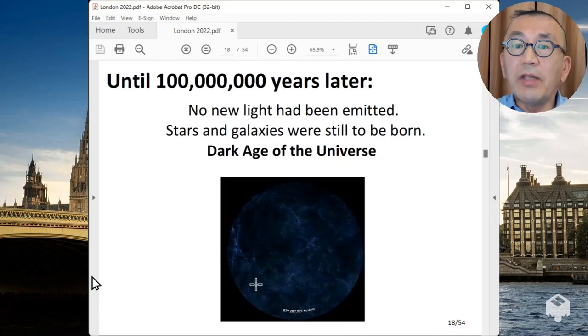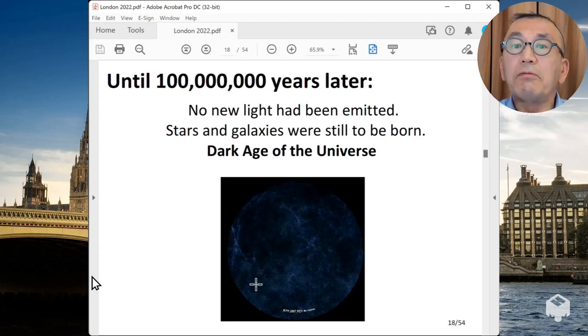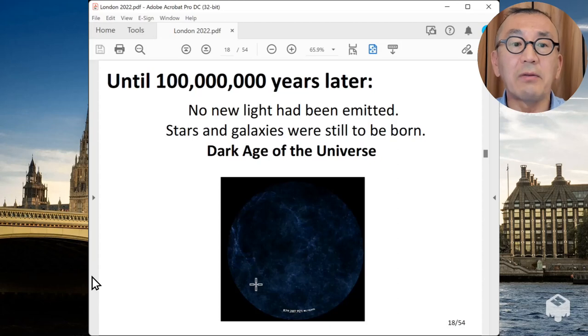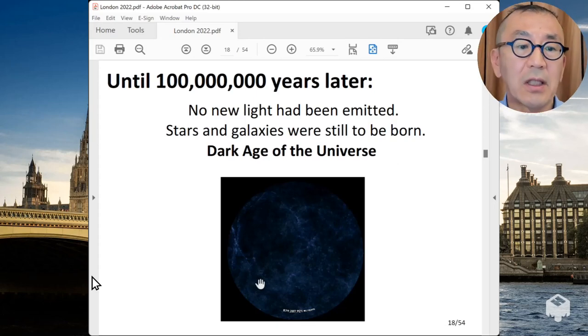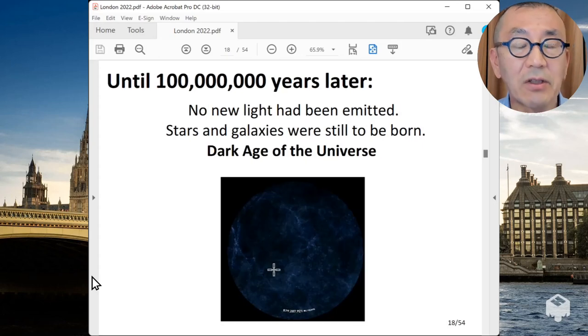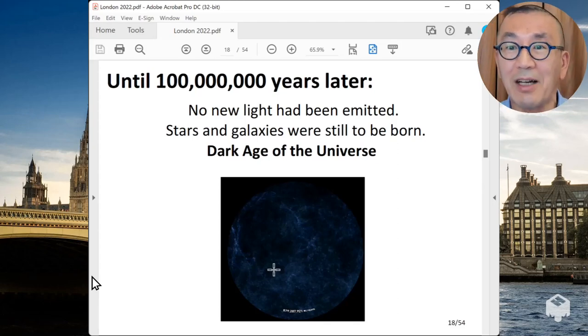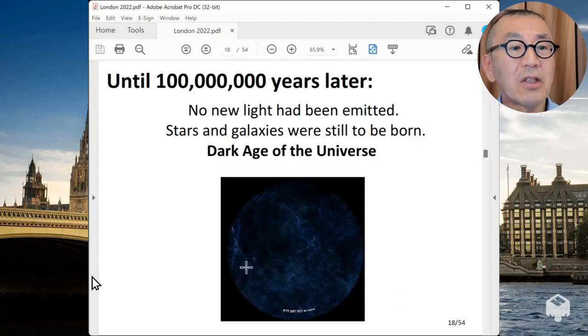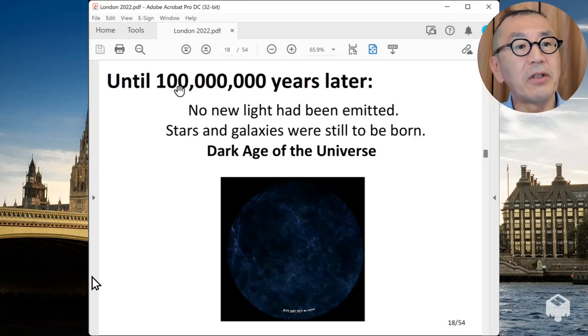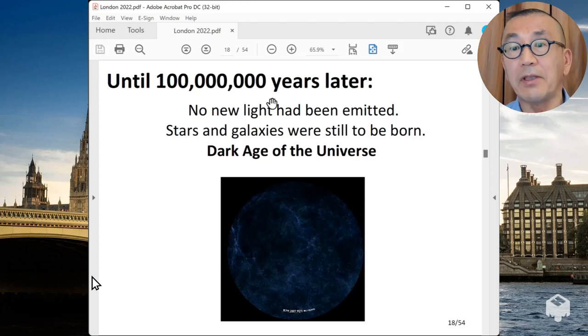And the universe continued to expand after that. Everything is made of neutral atoms. There are no stars. So that means that there are no light have been emitted after that. And stars and galaxies were still to be born. So the universe was very dark and boring place. And this period is called the Dark Age of the Universe. By the way, these kind of images I will show you are based from the movie. So you will see those images. So when you see those images at the movie, you please remember what I'm telling you right now.